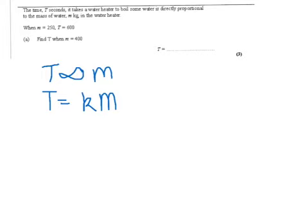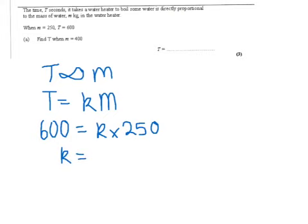We are told that when m is 250, t is 600. So we substitute those values into the equation. So t is 600, which equals k times m, which is 250. We divide both sides by 250 to get k as 2.4.